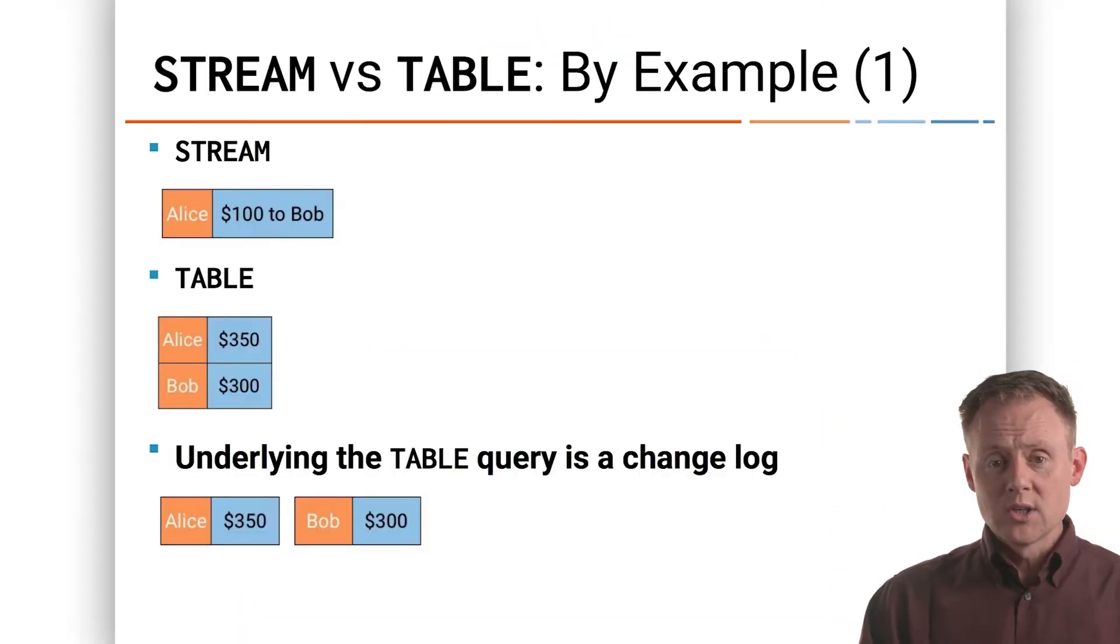Also, because that table changed, we can create a change log saying, well, two things have happened. Alice is now $350, Bob is now $300. That's a business event out in the world, Alice giving money to Bob. We've got the current state of the world in the table. And then we can take that table and say, look at the things that have happened to the table, and we can convert them back into a stream, which is a change log of the things that have happened in the table. So we go from stream to table to stream.